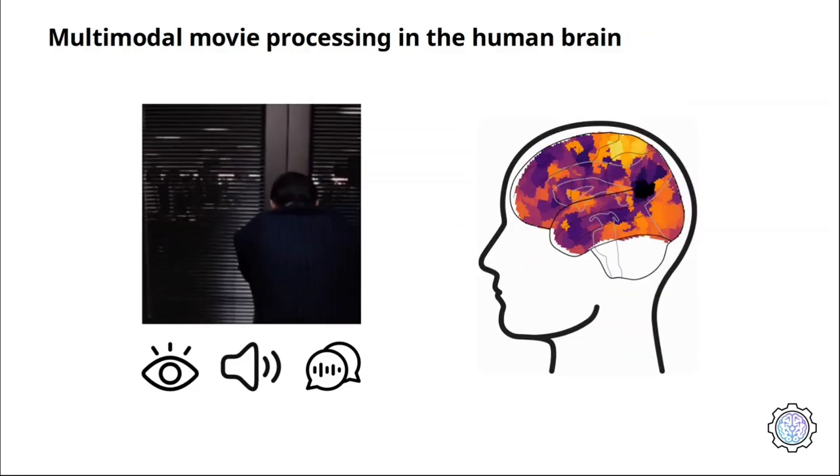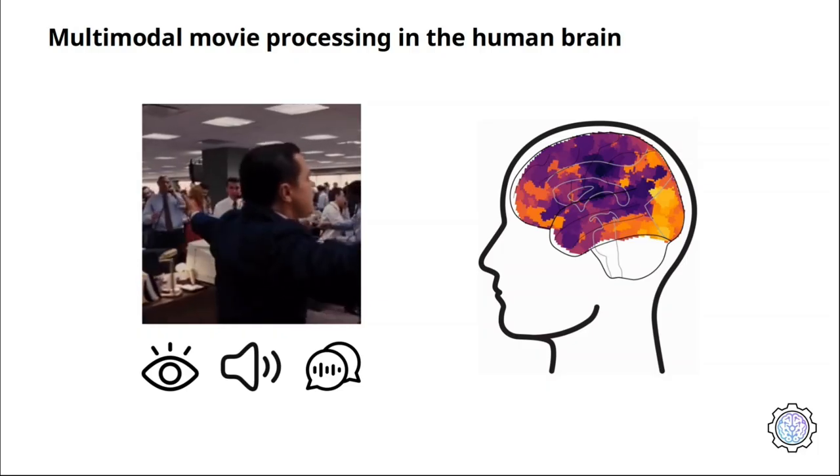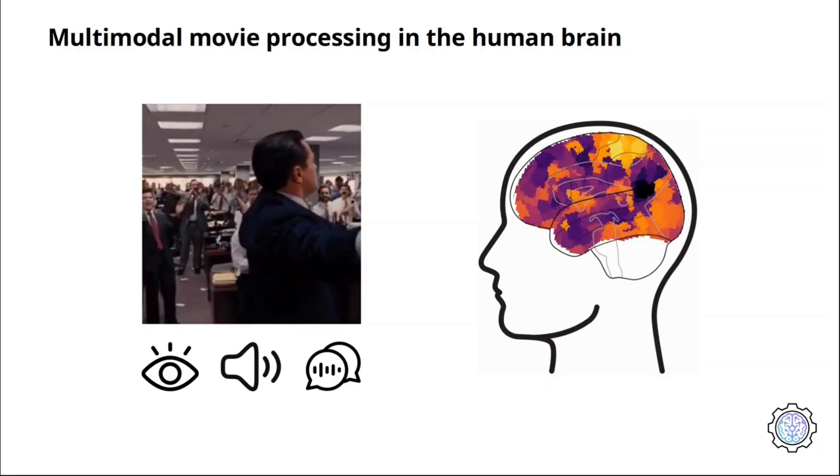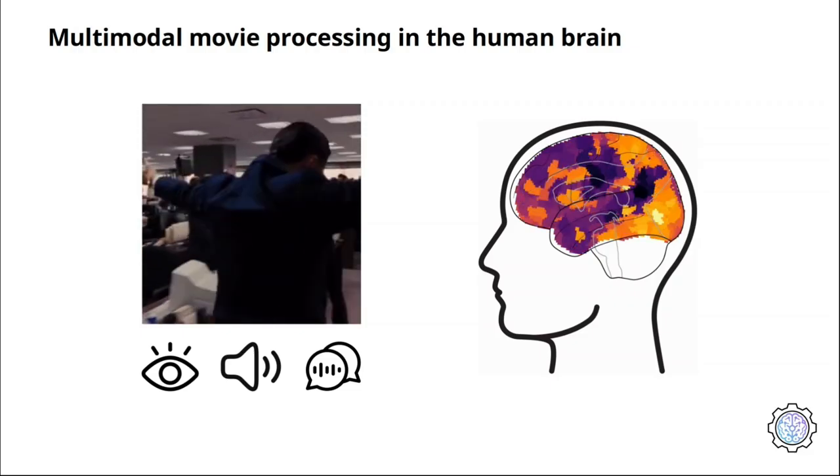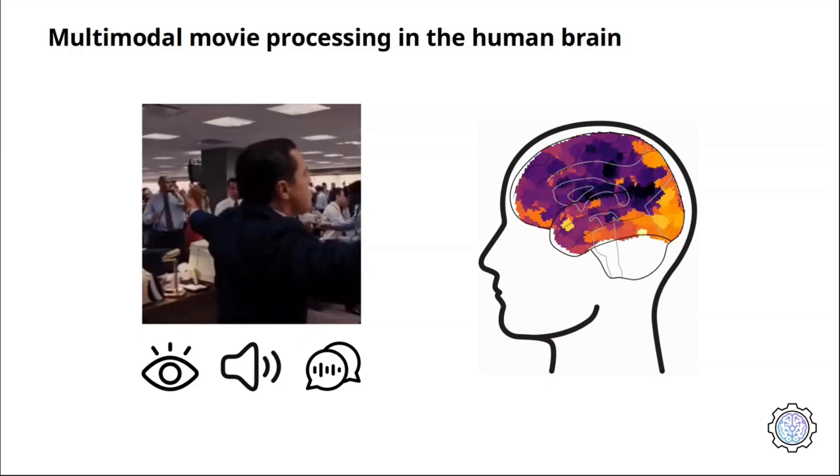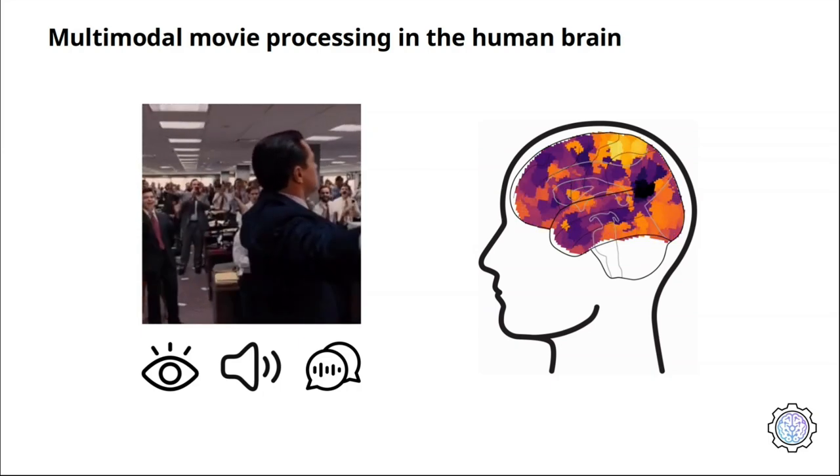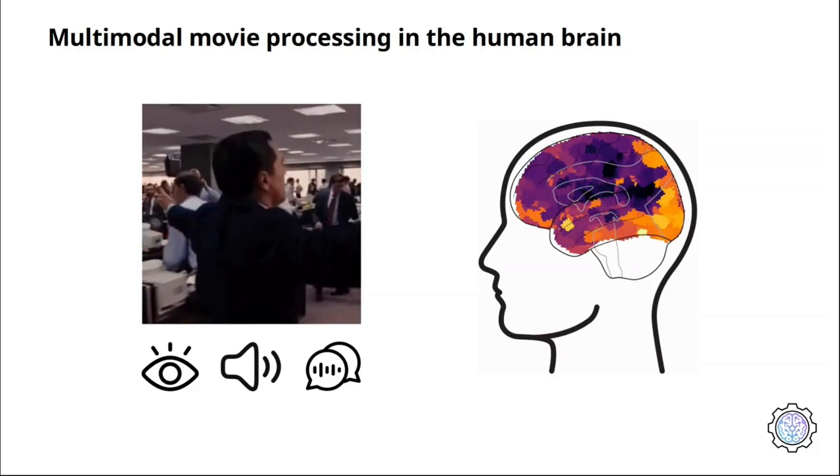This year the Algonauts Project focuses on multimodal processing, an unresolved problem in both biological and artificial intelligence research. Specifically, we ask you to build computational models of how multimodal movies including visual, audio and language input are processed in the human brain. And we believe that an effective way to promote the development of these models is through a challenge.